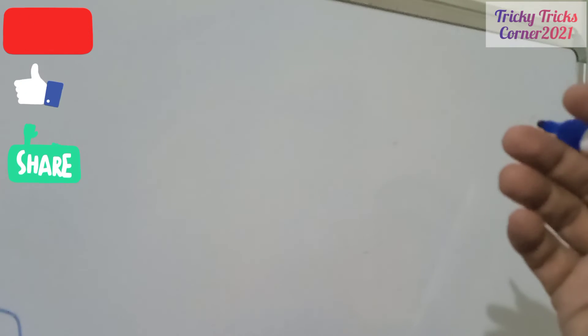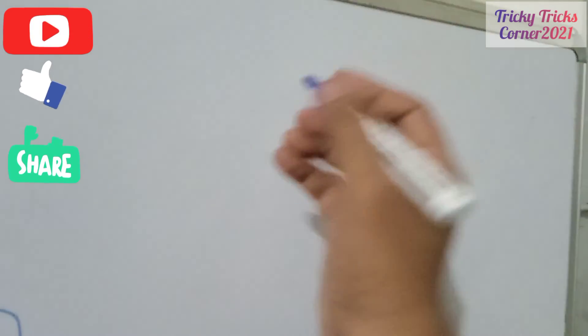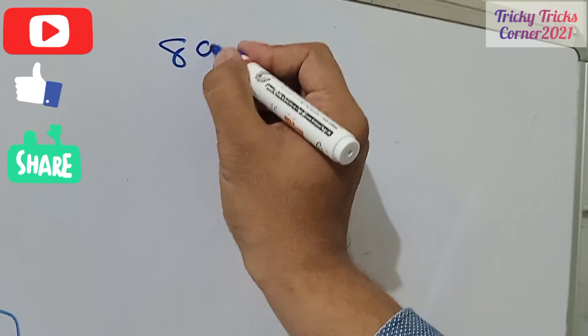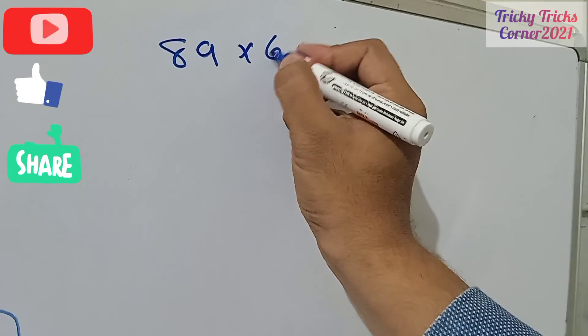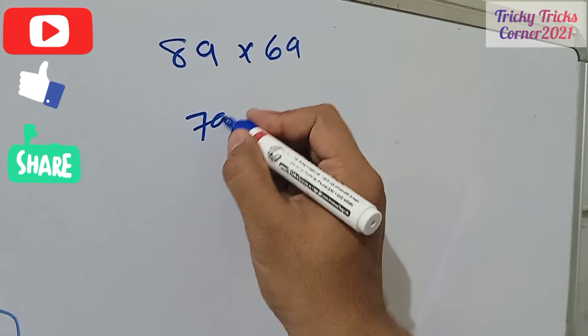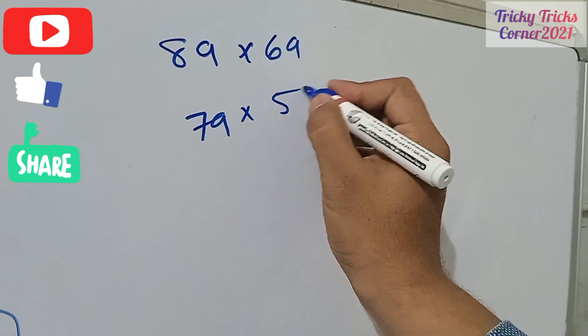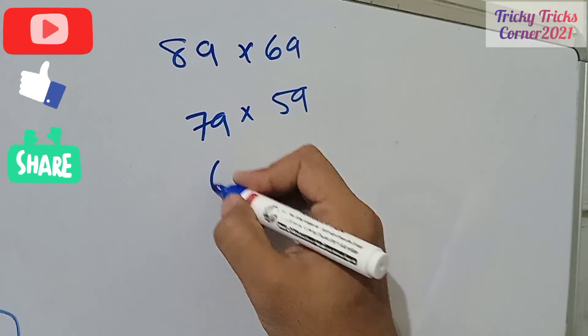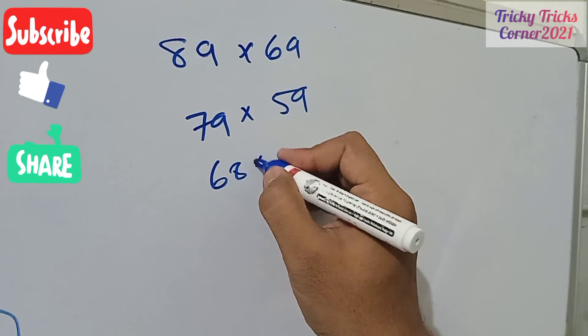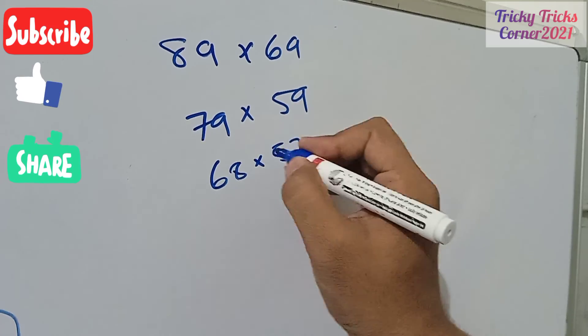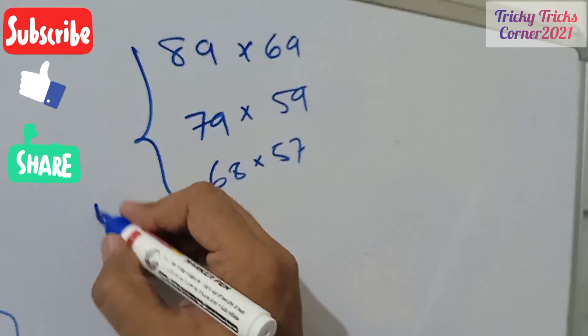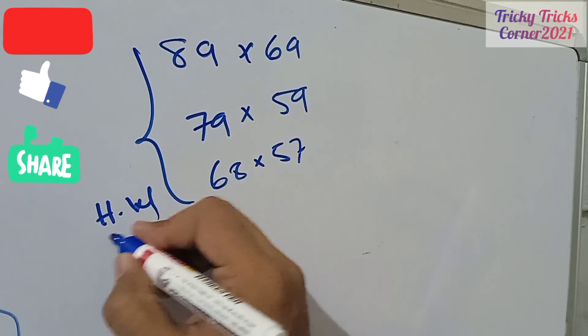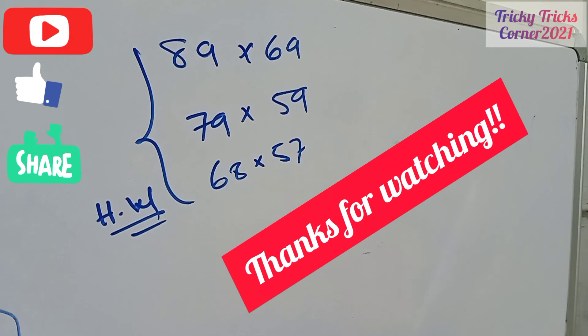First is 89 multiplied by 69. It's 79 multiplied by 59 and 68 multiplied by 57. These are your homeworks. Thank you so much, keep watching me, thanks for your love, and please do subscribe my channel for the daily updates. Thanks, thanks.